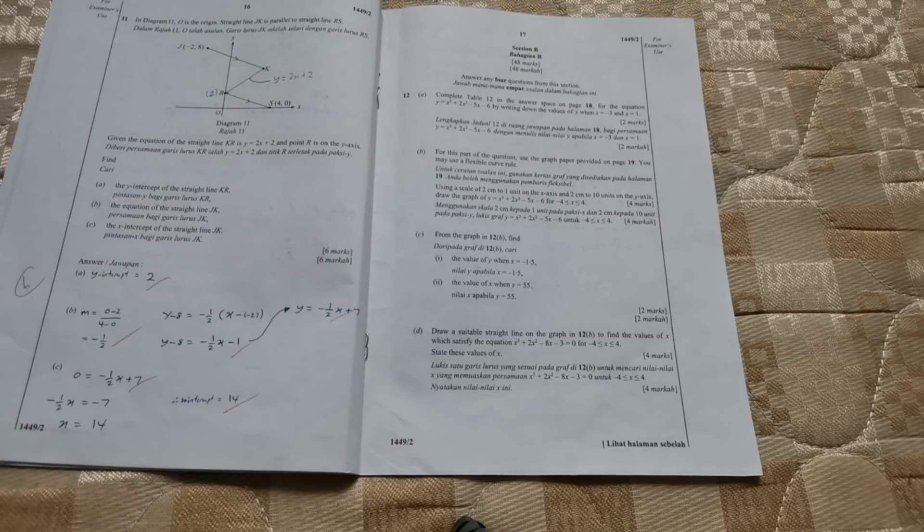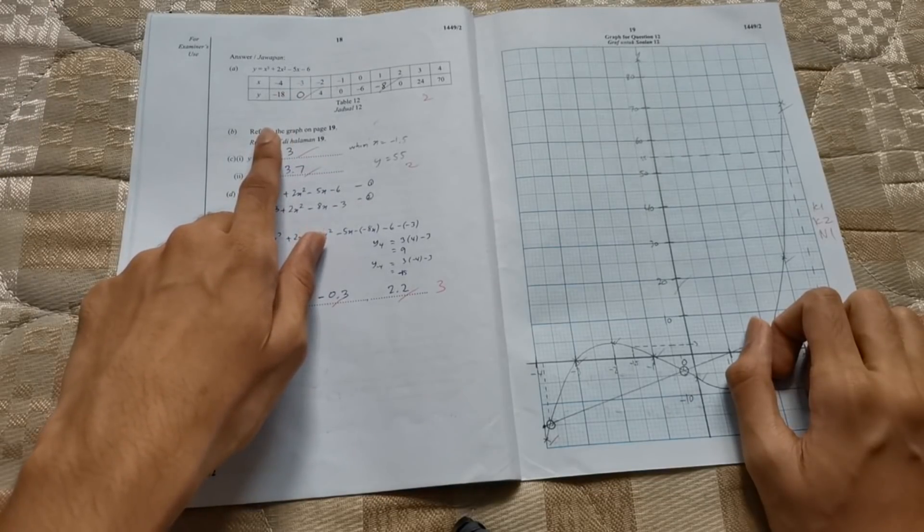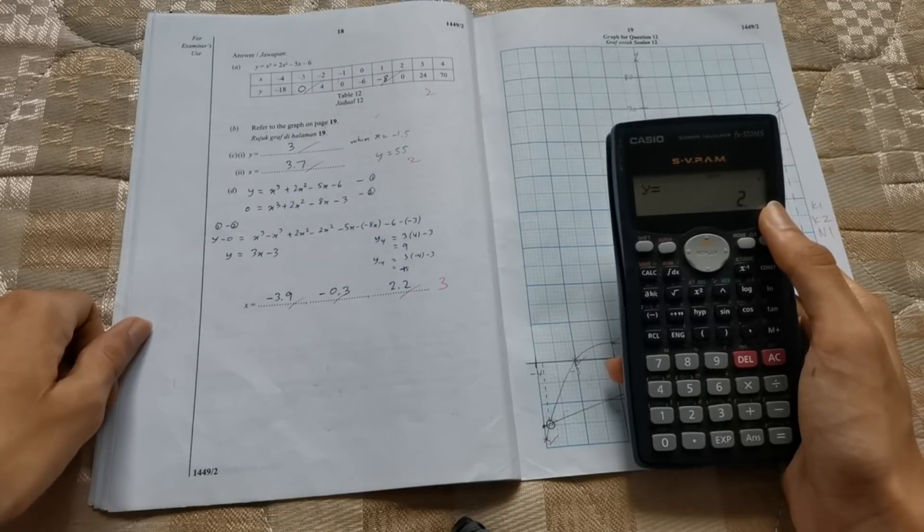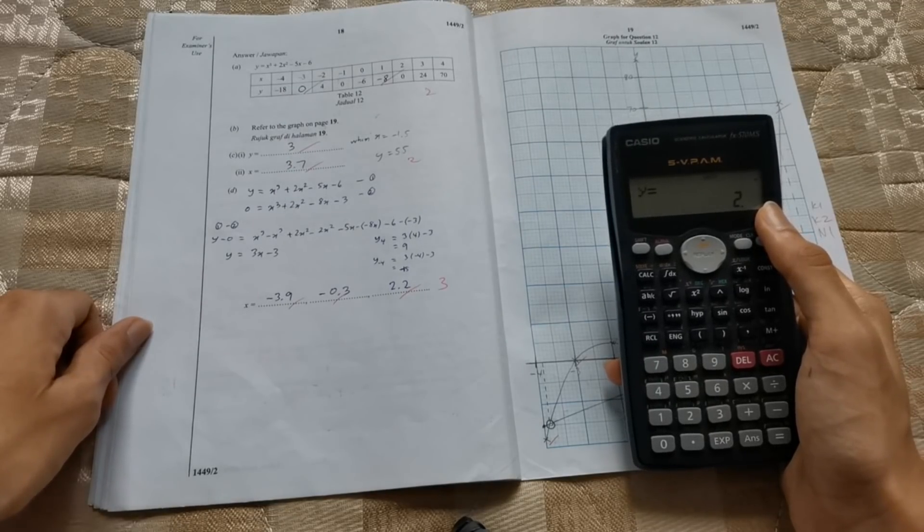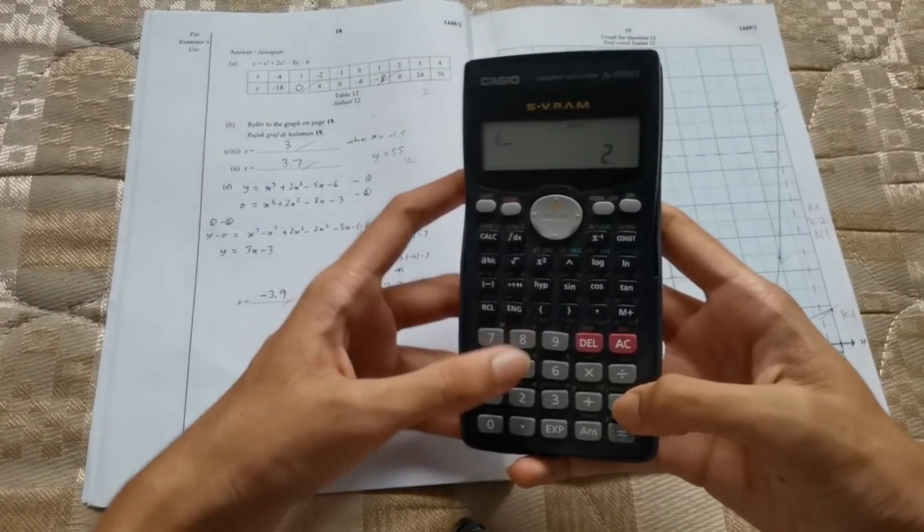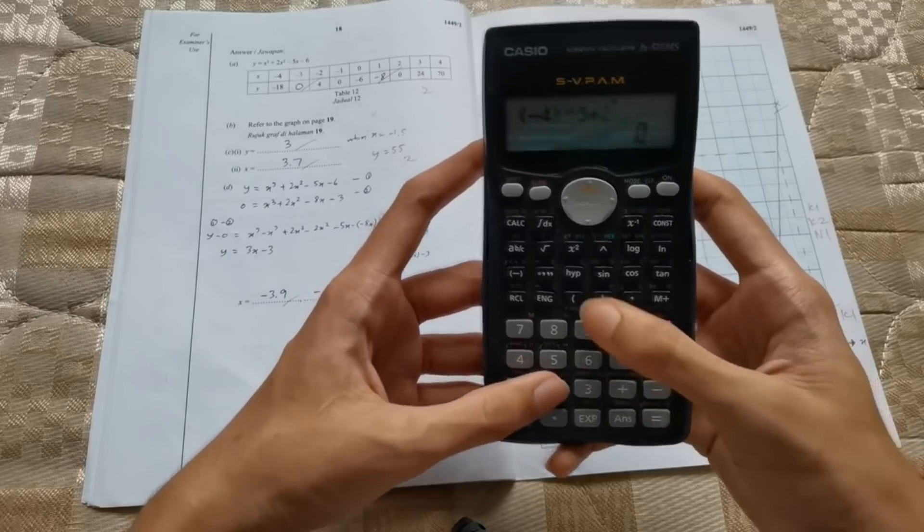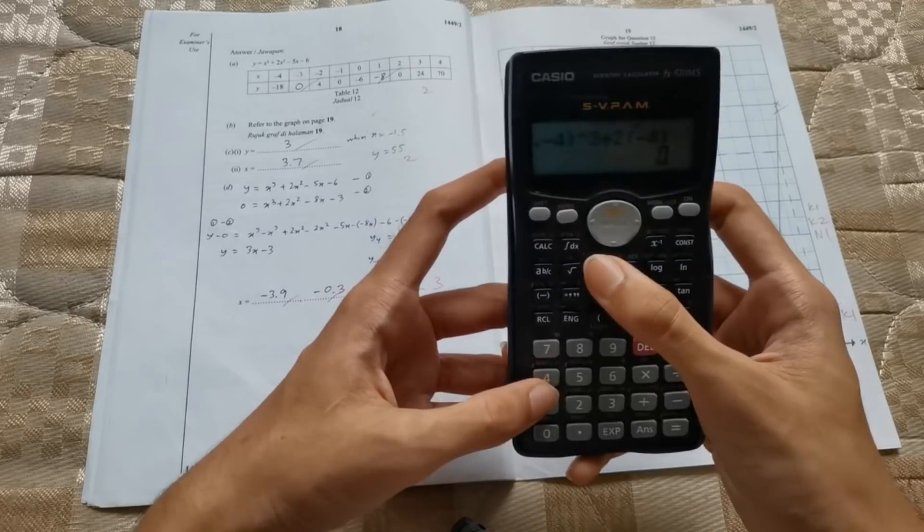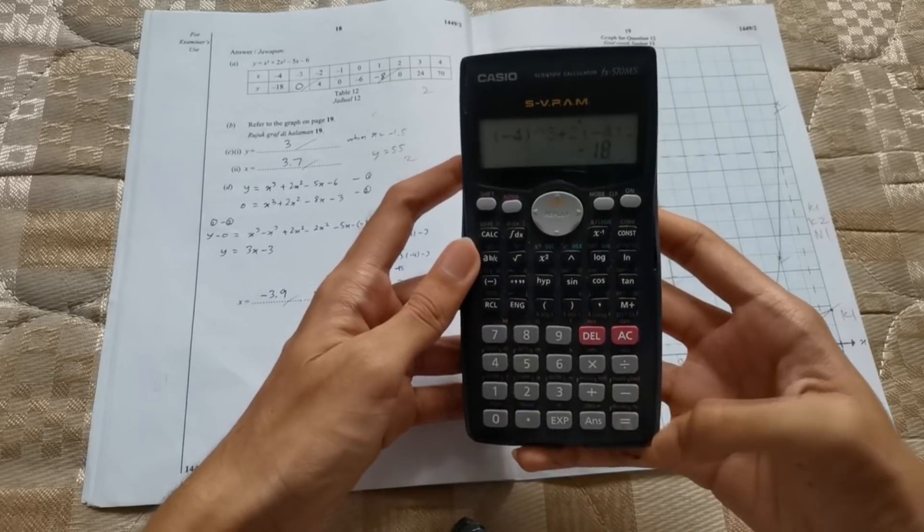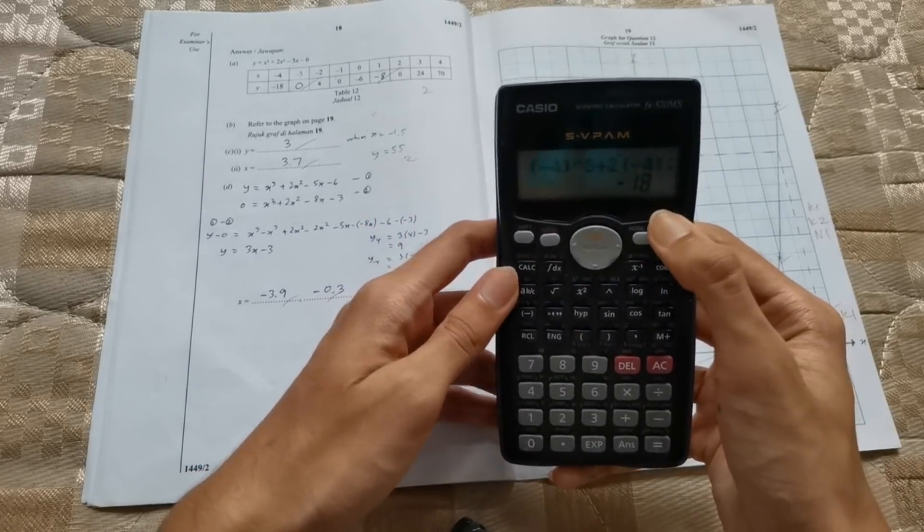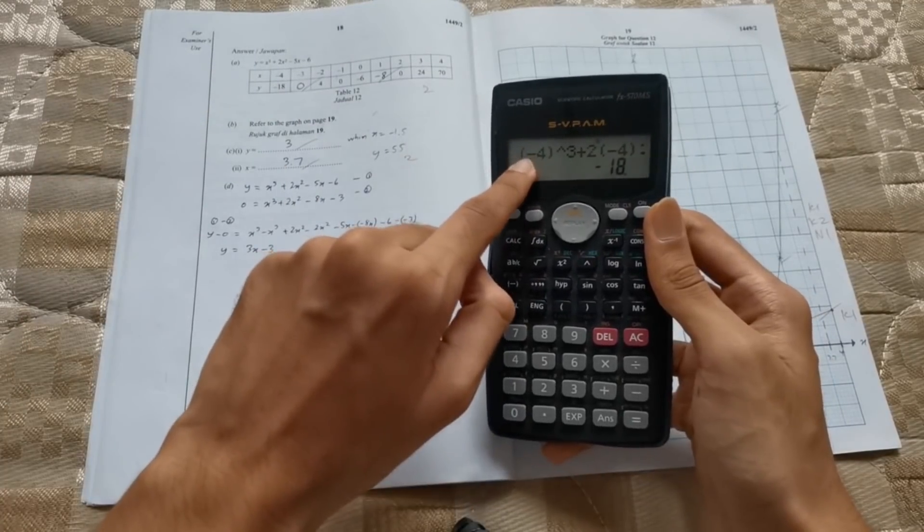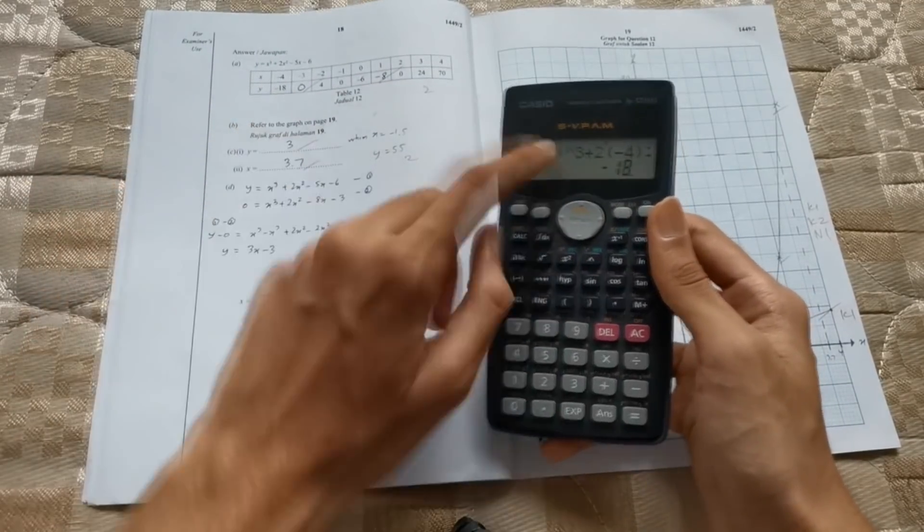Graph of Function. In part A, you will be given the easiest question ever, which is to fill in the blanks. For this question here, which is x cubed plus 2x squared minus 5x minus 6, I type it in my calculator as bracket negative 4 cubed plus 2 bracket negative 4 square minus 5 bracket negative 4 minus 6. And then I press equal, I'll get negative 18. This is to check whether or not I've typed everything correctly.